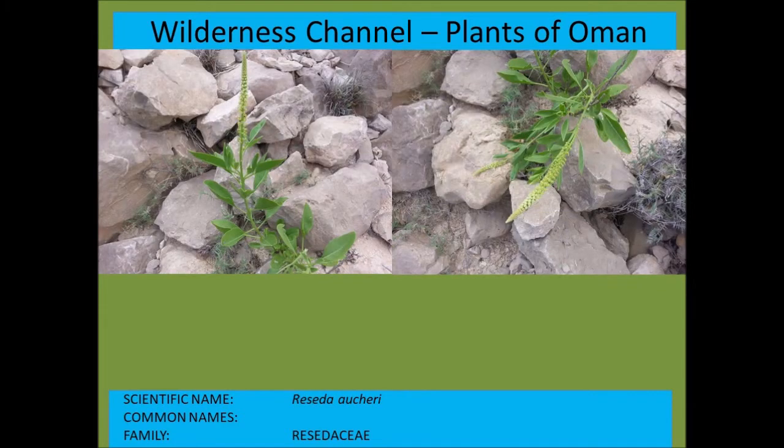Ristida or Carenia is very similar to Ecbolium viride — similar flower and inflorescence structure. Both are found in very dry, rocky areas.